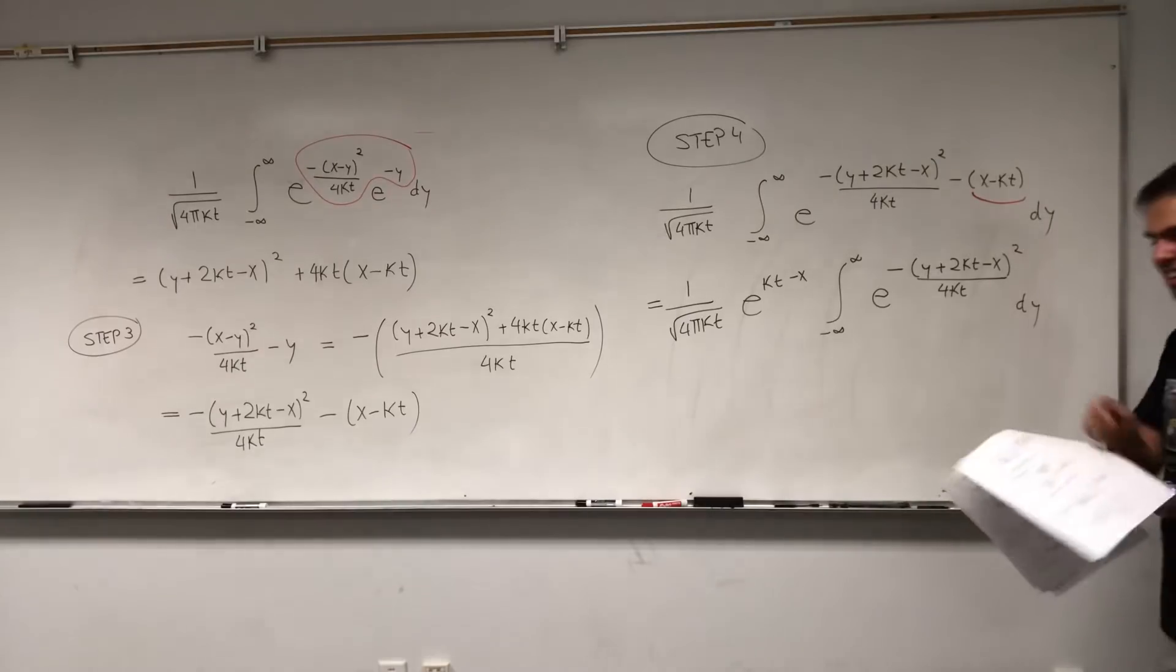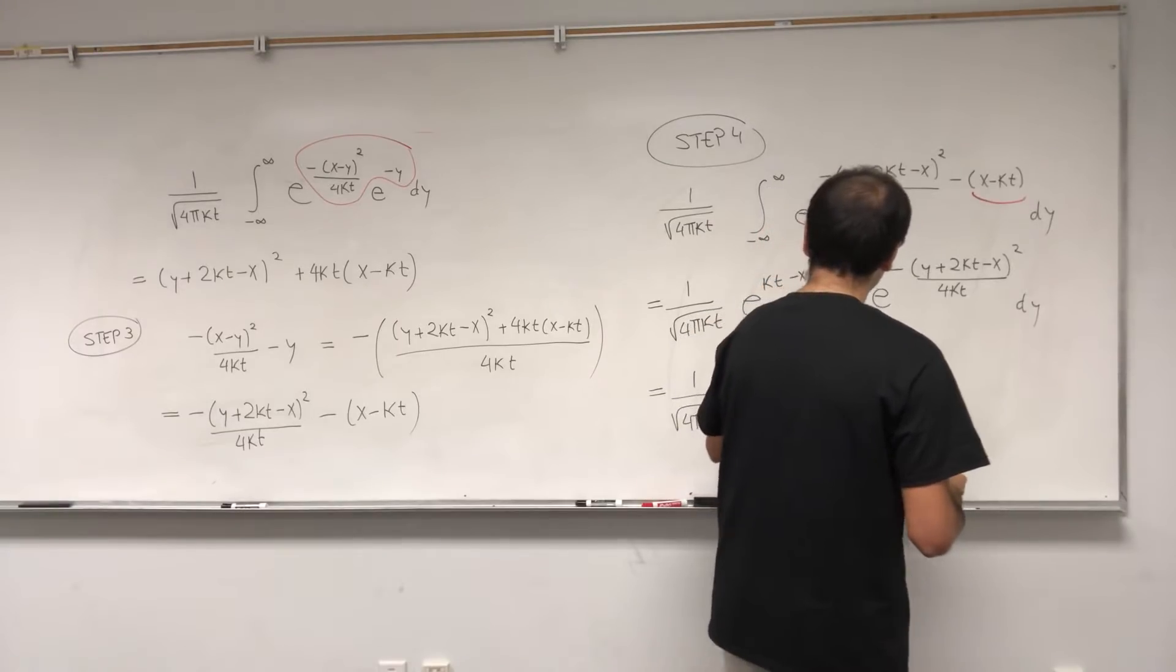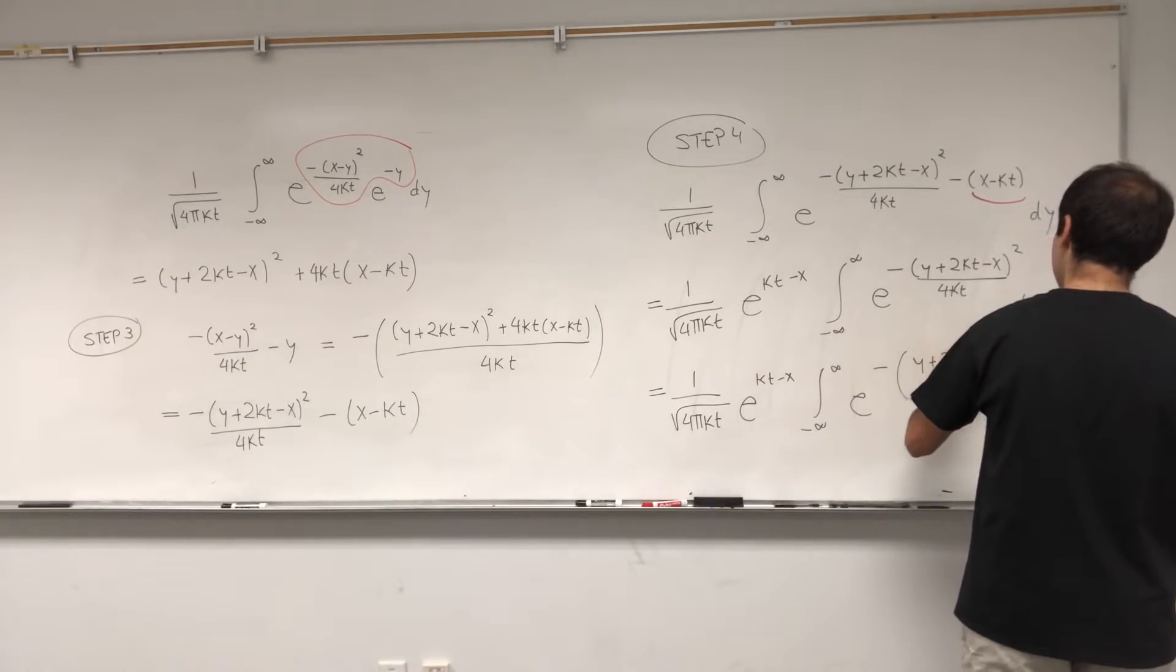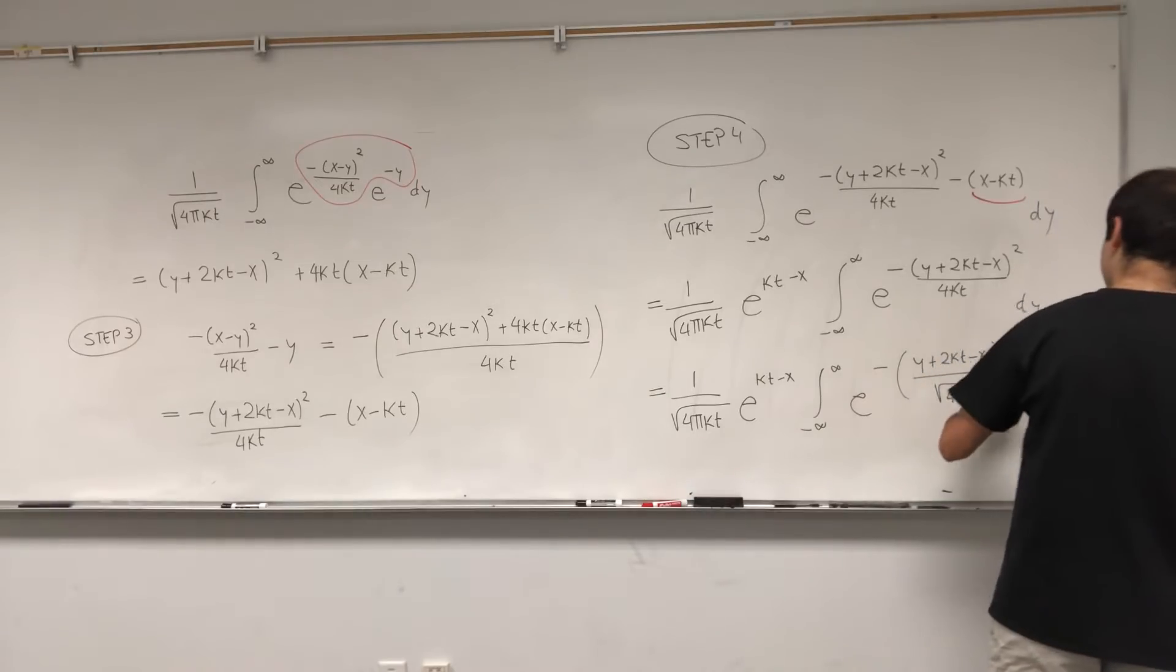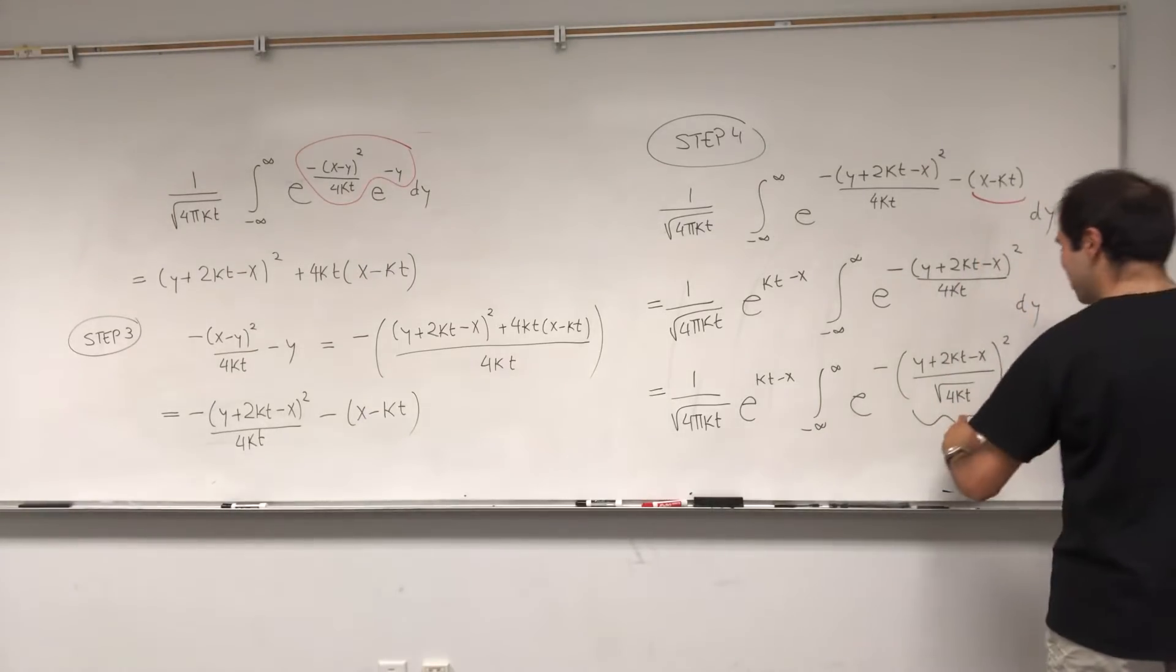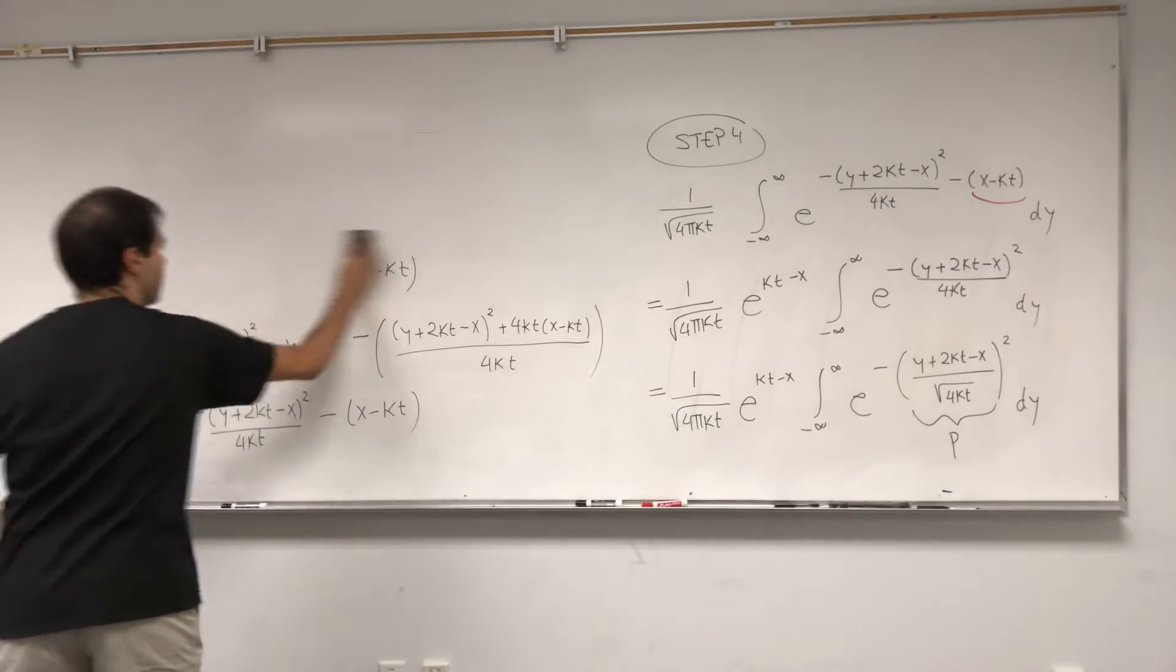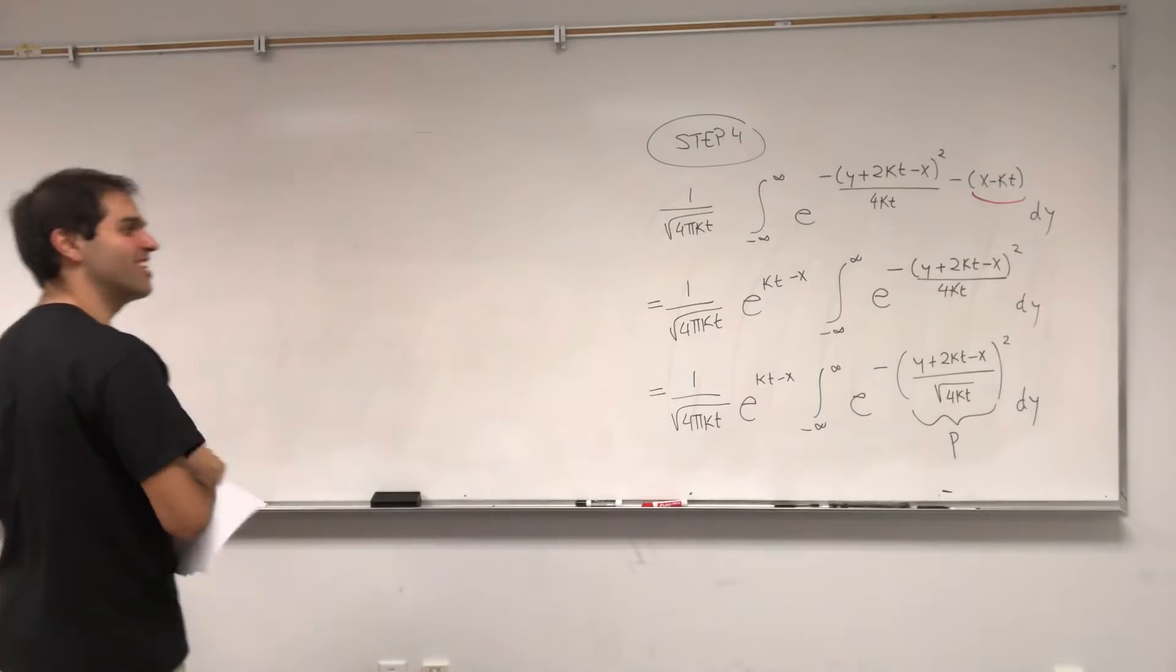Again, our exponent simplifies. Well, I can't skip this step. This expression that we want equals this expression. And what's nice about this, notice this junk here actually doesn't depend on y at all, so you can literally pull it out. So what we get is 1 over square root of 4 pi kt, e of this, so if you want e of kt minus x, and the integral from minus infinity to infinity, e of minus y plus 2kt minus x squared over 4kt dy.